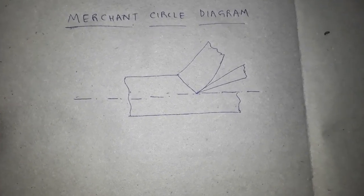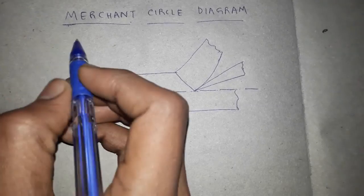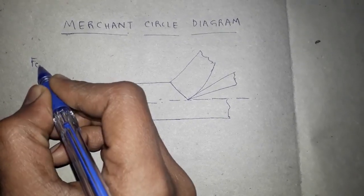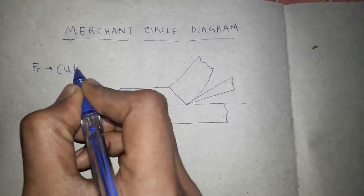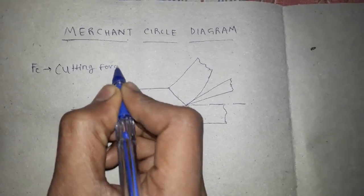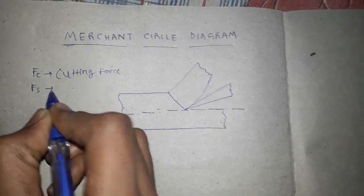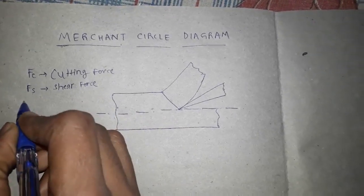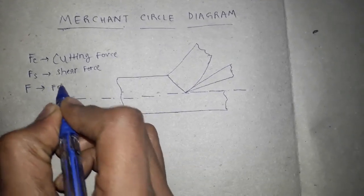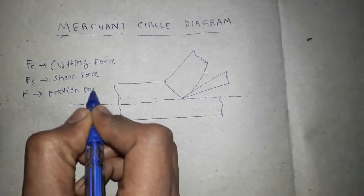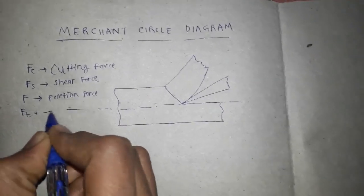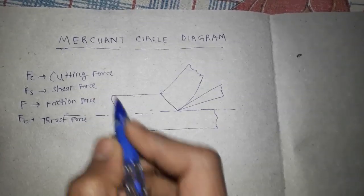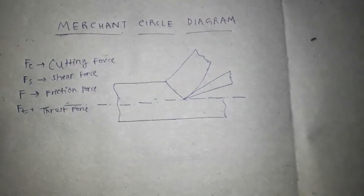During machining, four kinds of forces act on the tool and workpiece. The first is cutting force, denoted by FC. The second force is shear force. The third force is friction force, denoted by F. And the fourth force is thrust force. In this video we will learn how to calculate these four forces using the Merchant Circle Diagram.